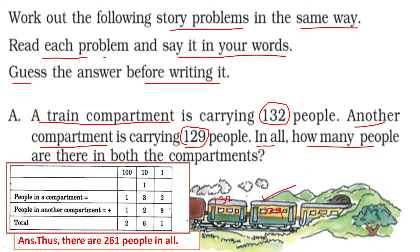You have to add the number of people in compartment 1 and compartment 2. Compartment 1 has 132, another compartment has 129. 9 and 2 make 11 — 1 carry. 2 plus 3 plus 1 makes 6. Then 1 plus 1 is 2. So the answer is 261. There are 261 people in all in the two compartments.